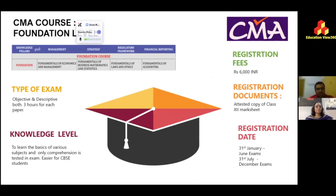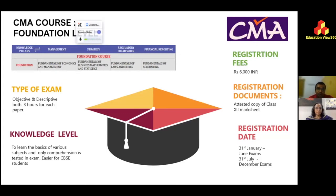The foundation level is both an objective and descriptive exam — similar to what you do in school. It's a three-hour exam for each paper, and you have to write four papers. The first paper is on economics and business studies, which you study in class 12. Then you have a paper on mathematics and statistics.